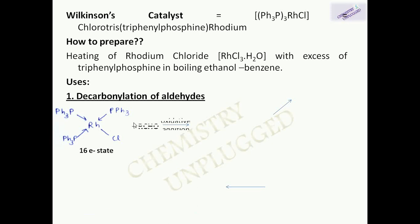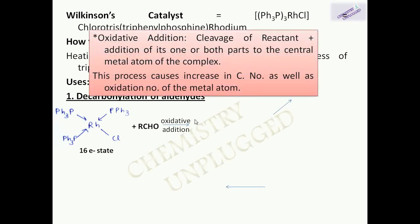When it reacts with an aldehyde, it undergoes oxidative addition. Oxidative addition means cleavage of the aldehyde and addition of its parts to the central metal atom of the complex. The aldehyde breaks into two parts — H and RCO — and either RCO only, or both RCO and H, will attach to the central metal atom, which is rhodium. This is oxidative addition.